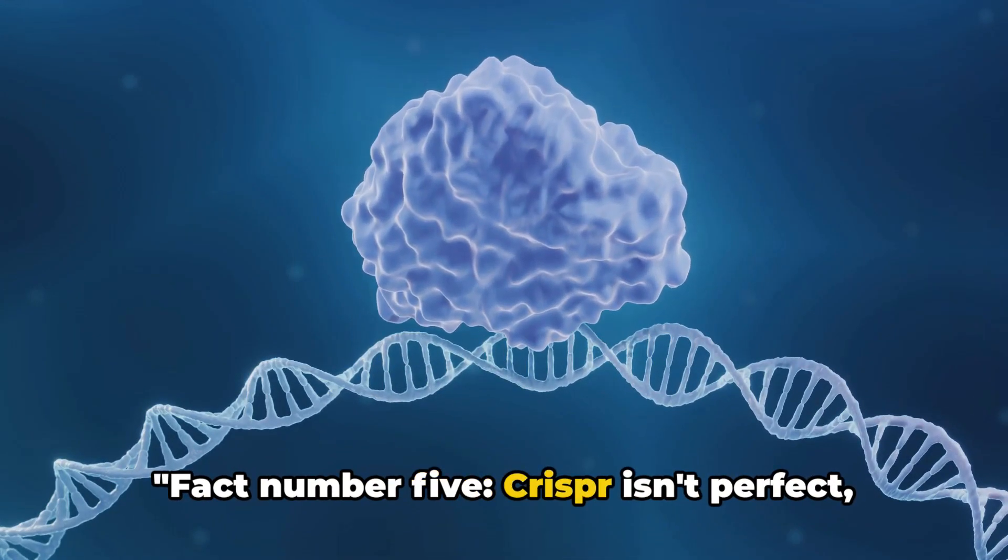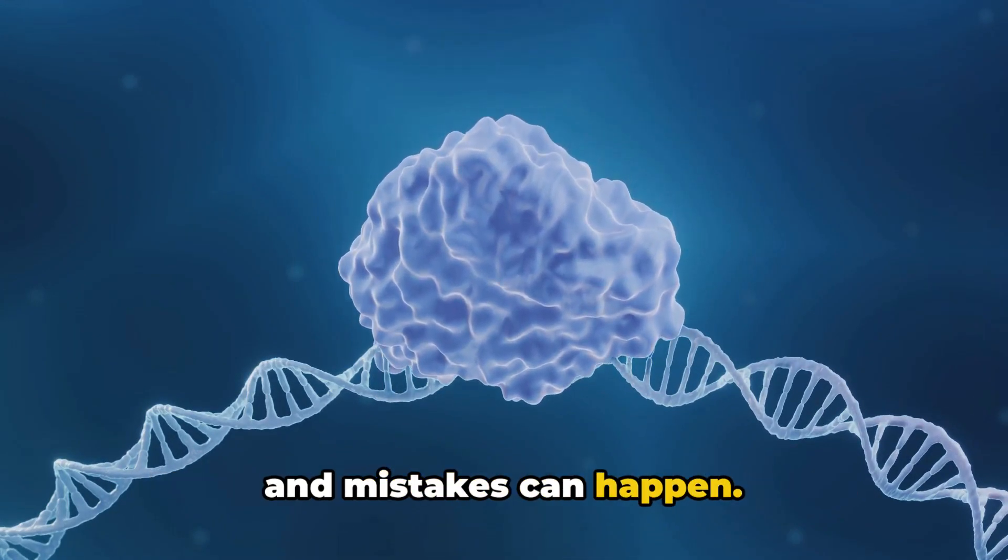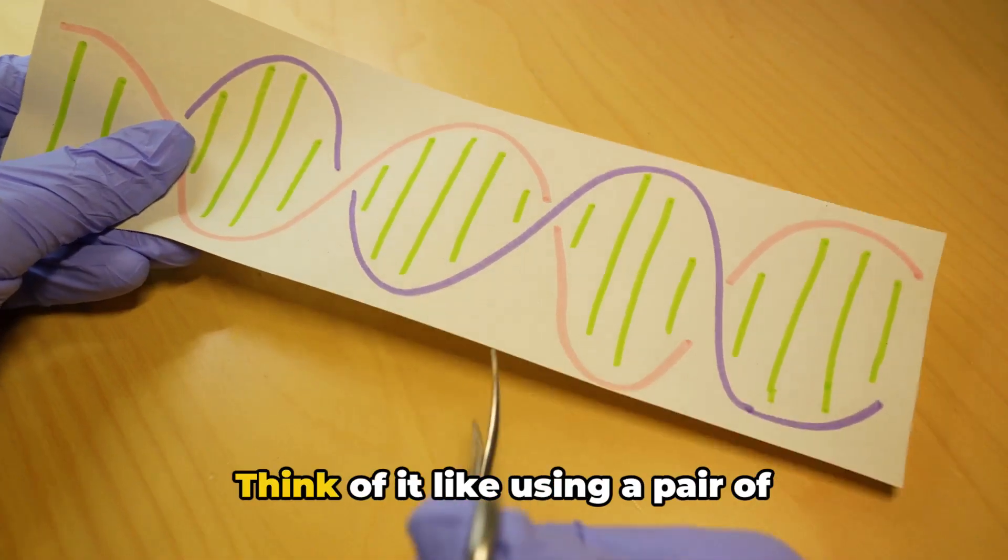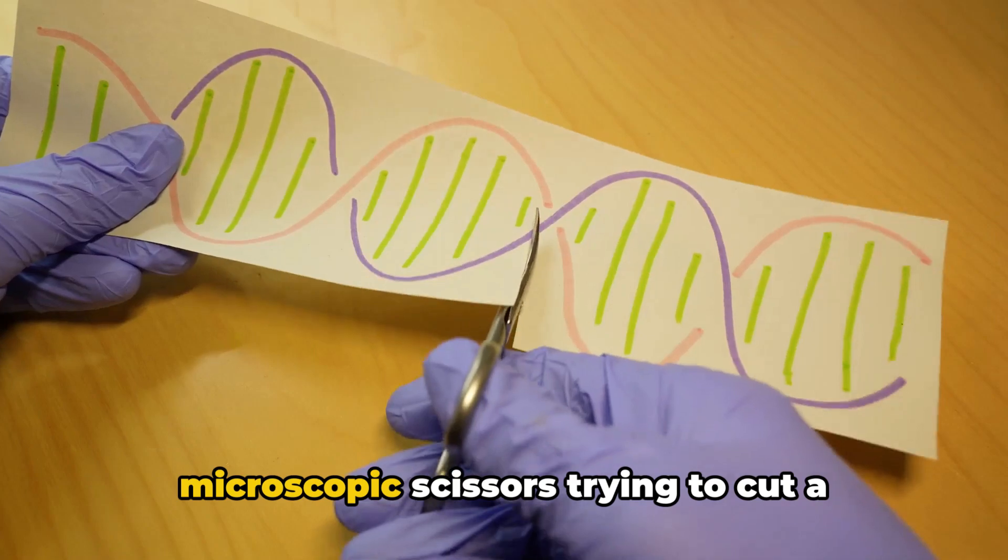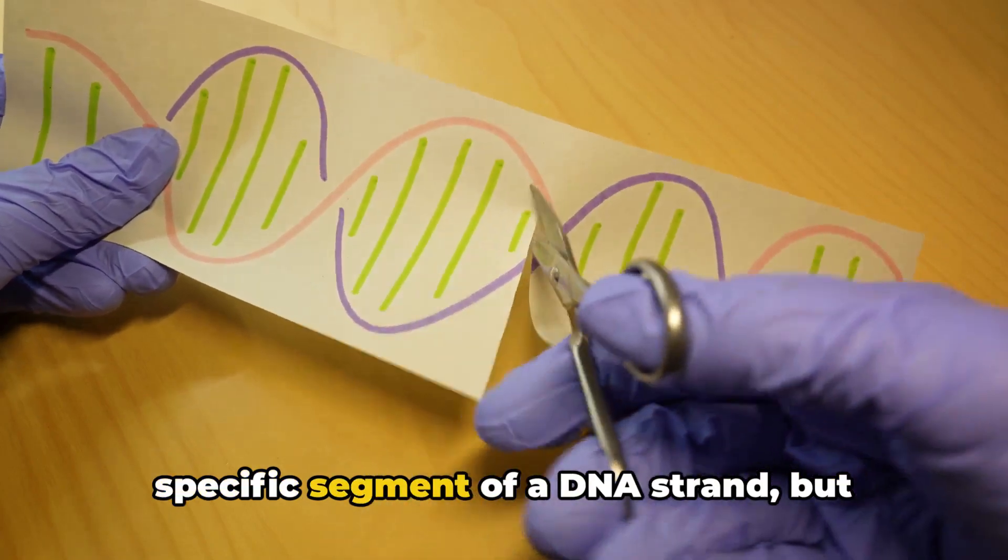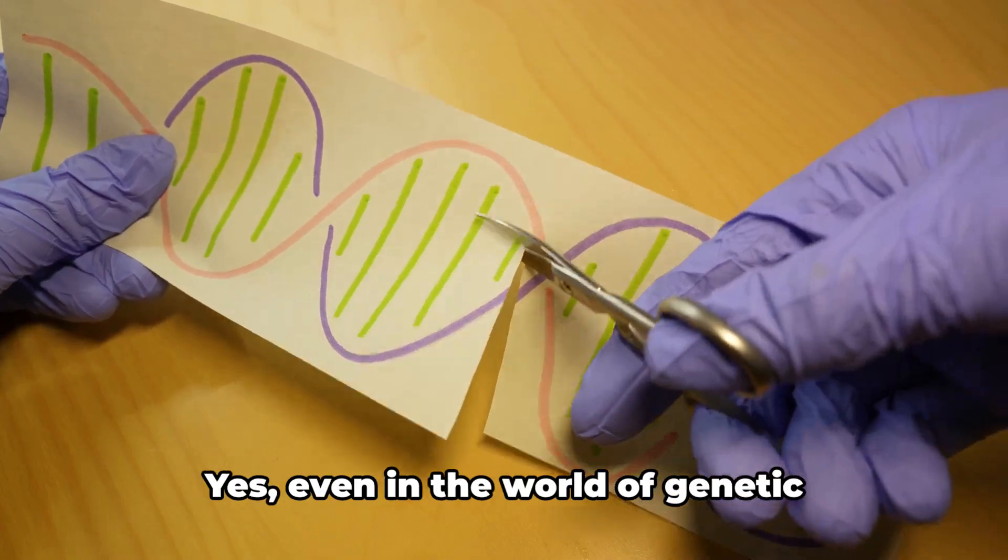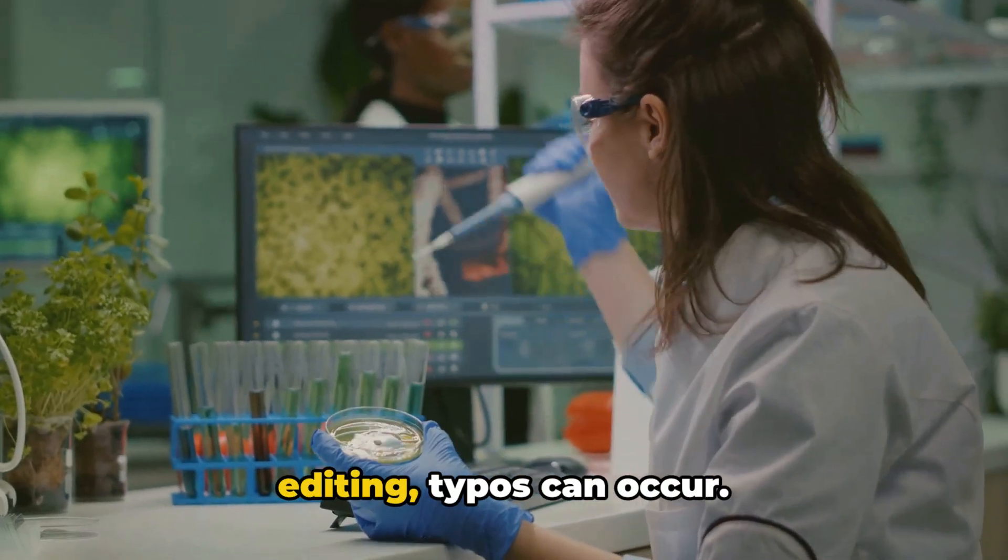Fact number 5. CRISPR isn't perfect, and mistakes can happen. Despite its precision, there's potential for off-target effects with CRISPR. Think of it like using a pair of microscopic scissors trying to cut a specific segment of a DNA strand. But sometimes it cuts the wrong part. Yes, even in the world of genetic editing, typos can occur.